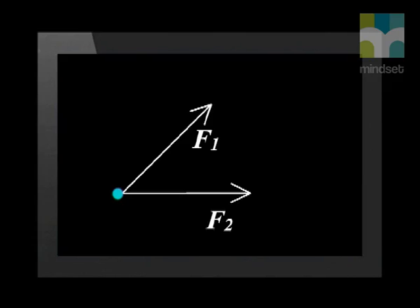In this diagram, you see two forces acting on an object. We draw two vectors, F1 and F2, to show the forces. The object is the dot where the tails of the vectors are together.